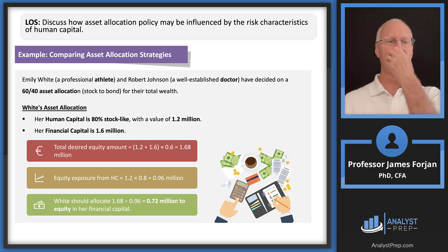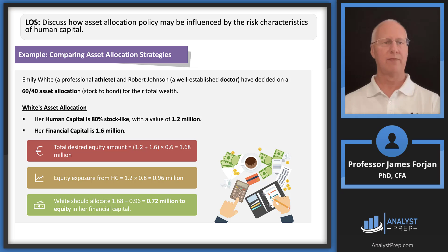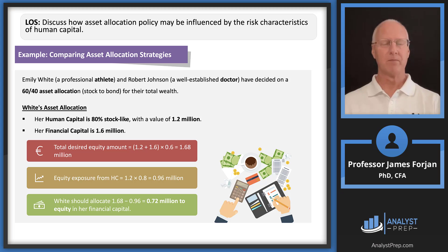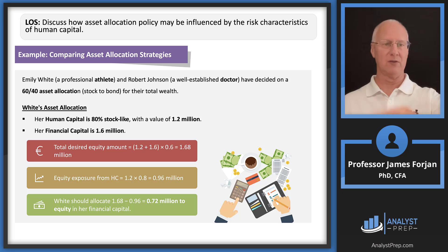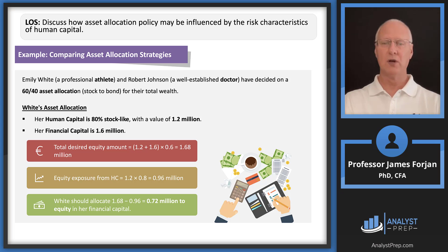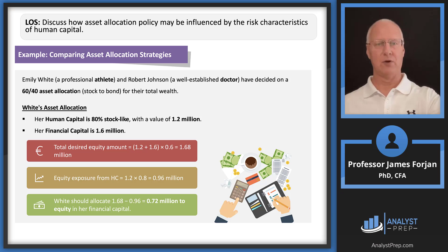Here are two clients: Emily White, a professional athlete, and Robert Johnson, a well-established doctor. Both decided on 60% equity, 40% fixed income for their total wealth. Emily's human capital is 80% stock-like with a value of $1.2 million; her financial capital is $1.6 million. Total wealth = $2.8 million × 60% = $1.68 million target equity. Human capital equity exposure = $1.2M × 0.8 = $0.96 million. Therefore, equity in her financial capital = $1.68M − $0.96M = $0.72 million.